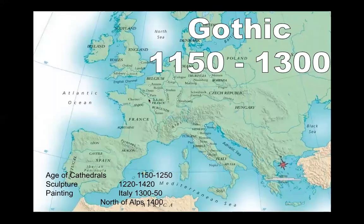The Gothic era is a time period we characterize from about 1150 to about 1300. That is primarily the time where we call it the age of the cathedrals — where there is a continuation of church construction.